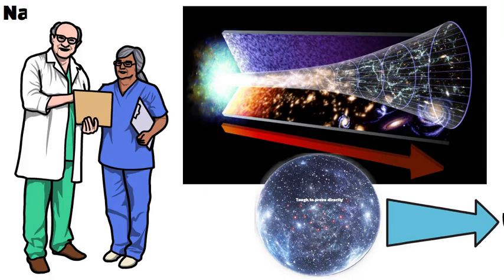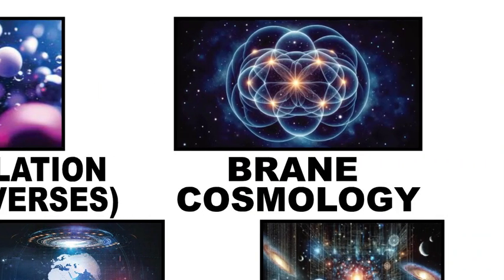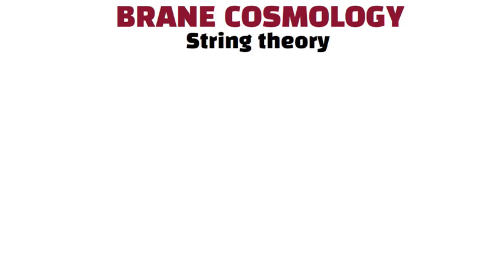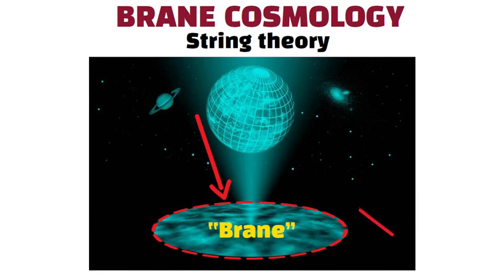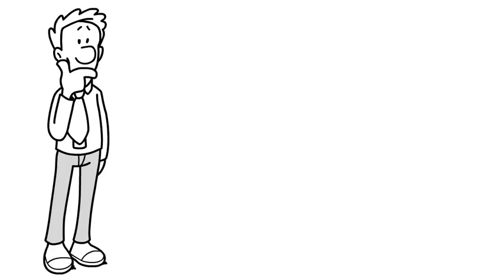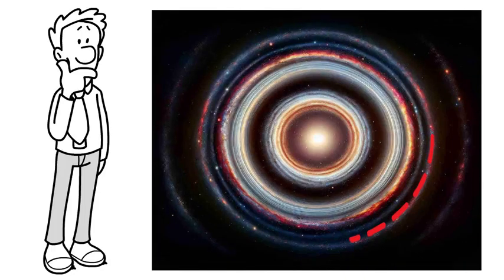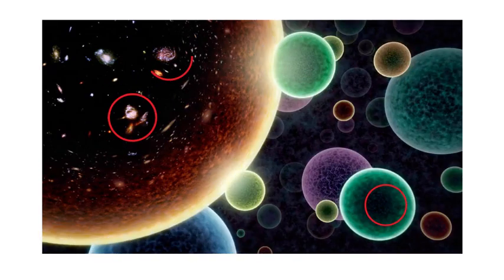Brain Cosmology. In some versions of string theory, our three-dimensional universe sits on a brain, short for membrane, floating in a higher dimensional space known as the bulk. Think of our universe as a sheet drifting inside a bigger arena. Other brains might be parallel to ours, each one containing its own universe.